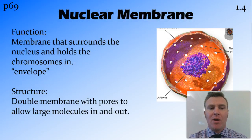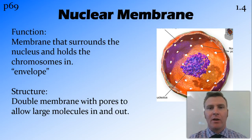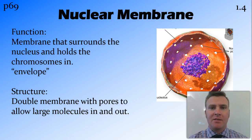It consists of the chromosomes surrounded by a nuclear membrane. The nuclear membrane is the membrane that goes around the nucleus and holds everything in like an envelope. It is a double membrane and it has pores in it, so little holes, that can allow proteins and other large molecules to move inside and out between the nucleus and the rest of the cell.